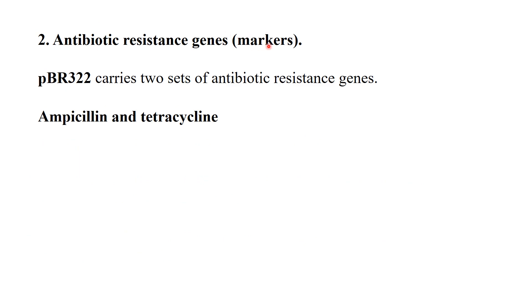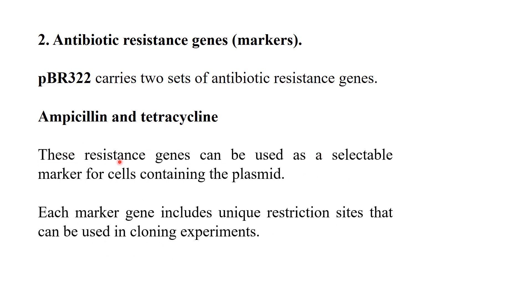The second feature of pBR322 is antibiotic resistance genes, also called selectable markers. pBR322 carries two antibiotic resistance genes: the ampicillin resistance gene and the tetracycline resistance gene. These two antibiotic resistance genes are used for selection of recombinants in bacterial host cells. Each marker gene includes unique restriction sites that can be used in cloning experiments.